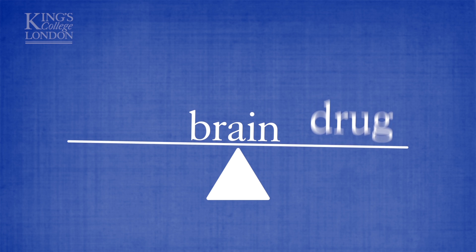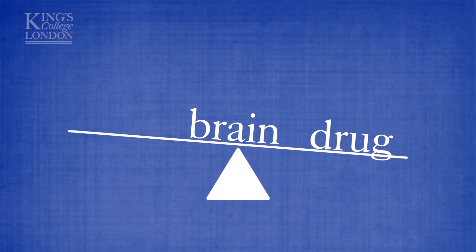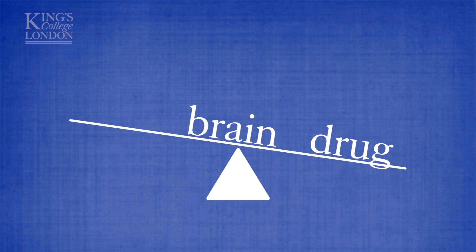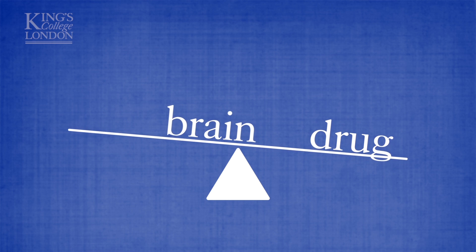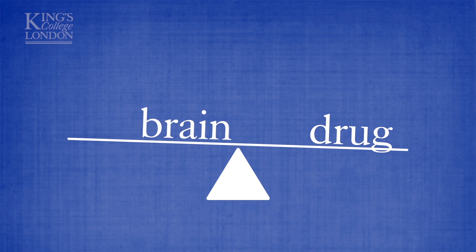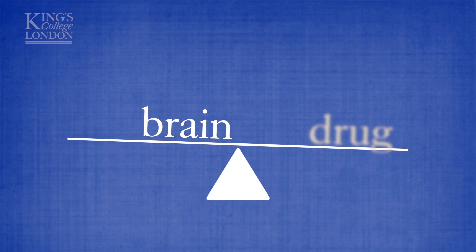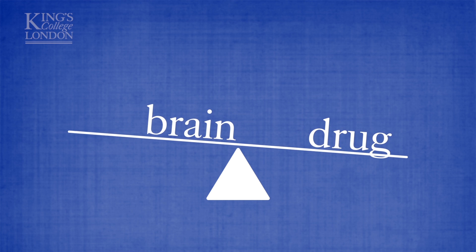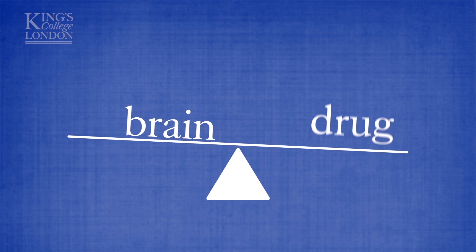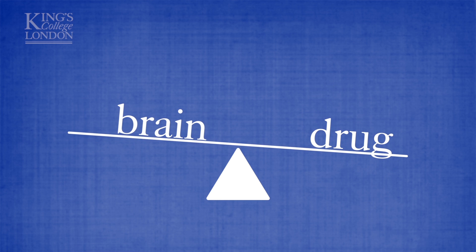When we consume a drug, we alter the functioning of our brain. We upset the balance. And as a result, our brain tries to adapt — it tries to minimise the effect of the drug and get back to normal. If we use a drug frequently, then the brain will adapt to try and be in balance when the drug is present.